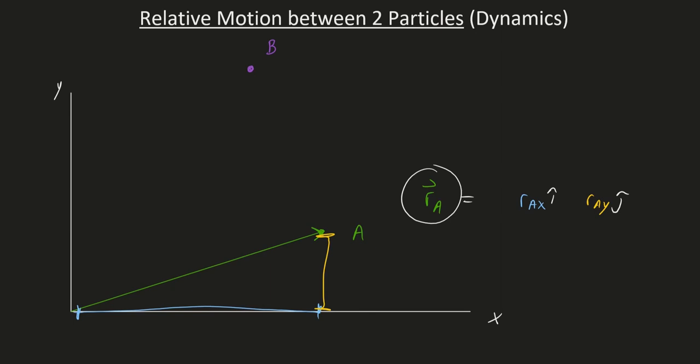So of course this is my position as measured from the origin. Of course we'll have the same concept for B. A position variable that has the x and y information for B, also measured from the origin.